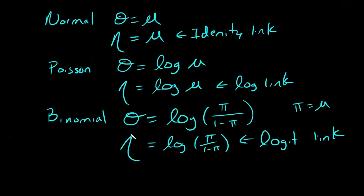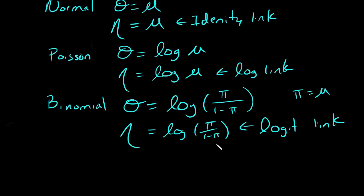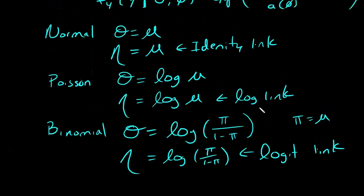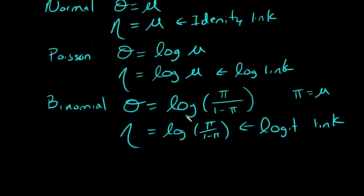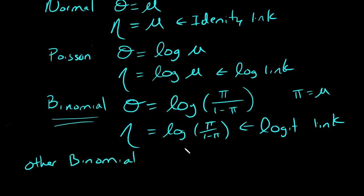Canonical links lead to desirable statistical properties, though they are definitely not the only link option, and they're not always the best option. You want to do model fitting, you want to test the quality of your fit after you've run an analysis and see which links are the best. For example, for the binomial distribution, there are several other popular choices that are not the canonical link.